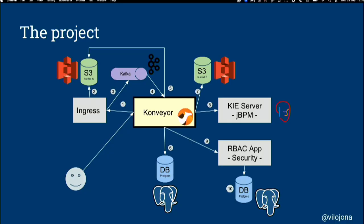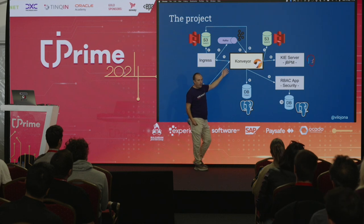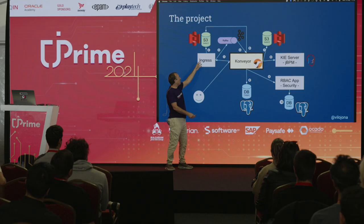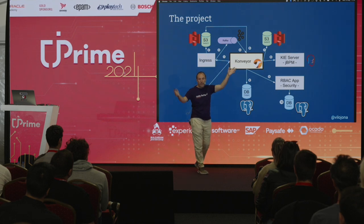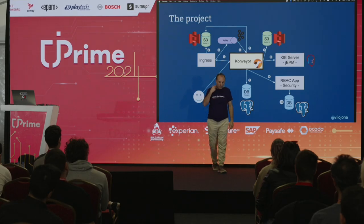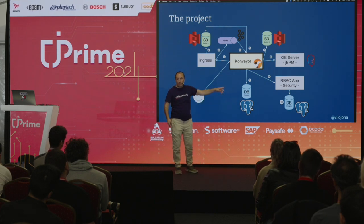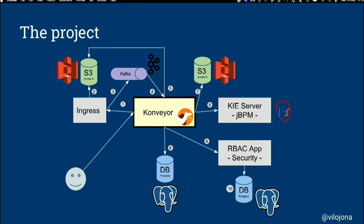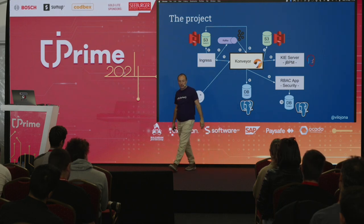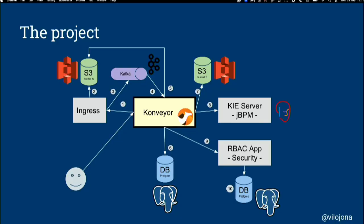We had this project that was receiving information from a user sending files. We were doing some kind of magic in the project, sending it to a third-party project also from Red Hat. That project was doing another magic — storing things in an S3 bucket and sending a Kafka topic saying, hey, I did something with that file. We were receiving that, connected to the Kafka topic, sending it to a JBPM in order to follow and execute some rules with that payload, receiving the calculation, storing the file, and all of this considering security stored in a PostgreSQL database.